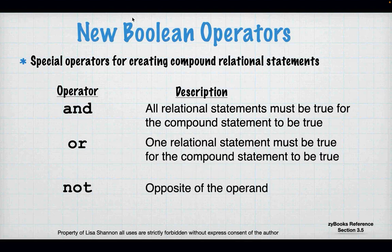You also have Boolean operators: and, or, and not. And says everything must be true for my statement to be true. Or says only one thing has to be true for my whole statement to be true. Not basically means the opposite. I don't use not with and and or a lot — I prefer to construct my test differently — but it's important to know it's there.